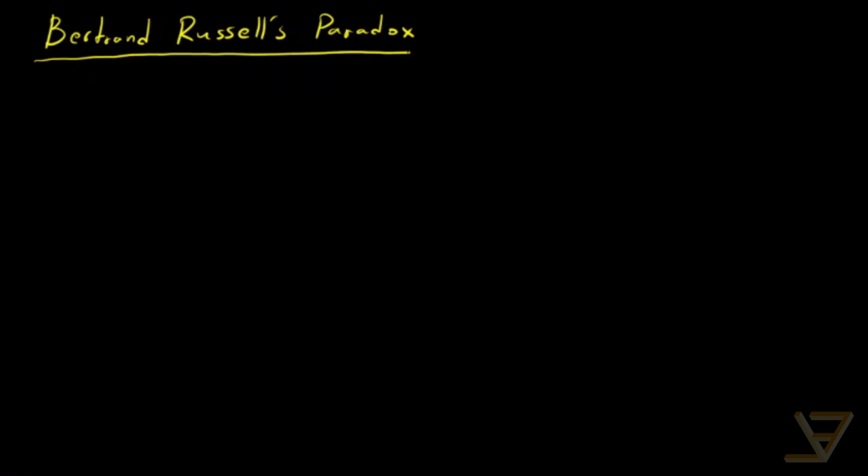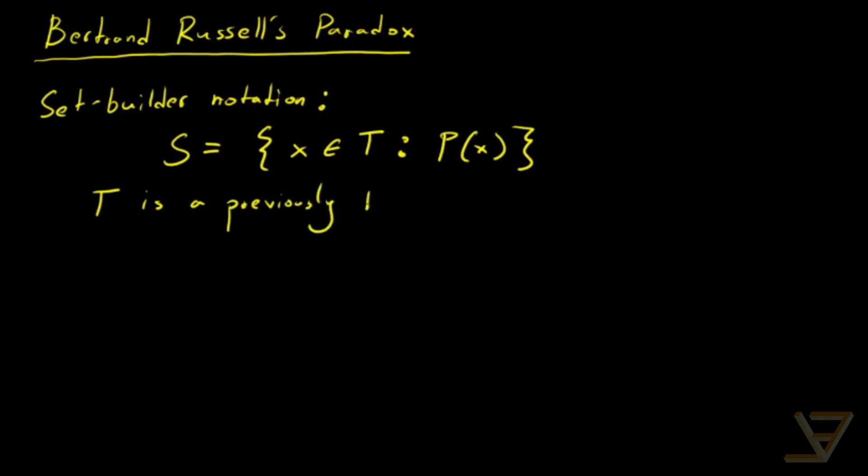The place that we'll begin is with set builder notation. You've probably seen this before. What we do is that we define sets according to something like the following. S is equal to x in a set T such that a predicate P(x) is satisfied. So T is a previously known set and P(x) is a predicate.